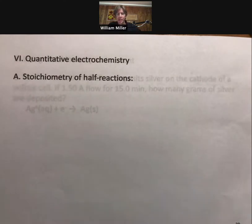Now let's talk about quantitative electrochemistry, something I like to call electron bookkeeping, because we're going to be doing stoichiometry with half reactions, and that stoichiometry will involve the number of electrons in the half reaction.